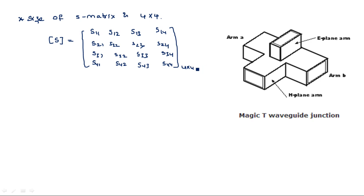These are the S-matrix parameters of the Magic T junction. There are four by four, so totally 16 parameters to calculate in general. But it is very difficult to calculate each and every parameter, so we apply the properties of the S-matrix to reduce these parameters to a lesser value.